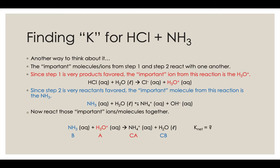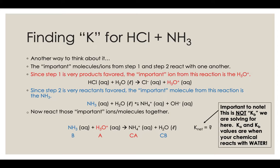We're going to take the big product of step 1 — the hydronium ion — and react it with ammonia, because most of the ammonia isn't turning into ammonium and hydroxide. When we do that, our ammonia acts like a base, a proton acceptor, and the hydronium ion is our acid in that reaction. After that proton gets donated to the ammonia, it turns into its conjugate acid, the ammonium ion. And the hydronium ion turns into its conjugate base, water. If we were looking for the K net, something important to note — this is not Kb we're solving for here.